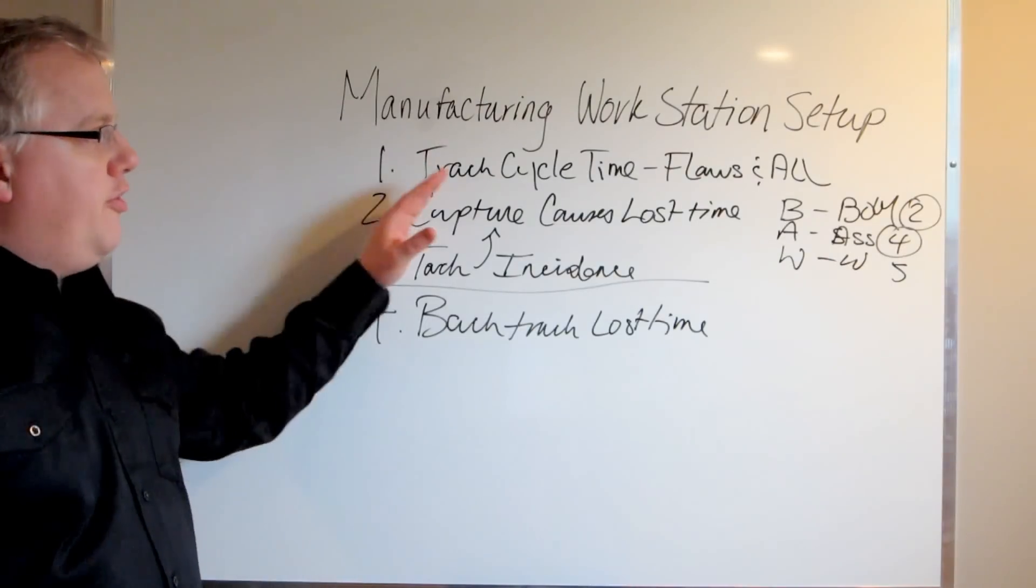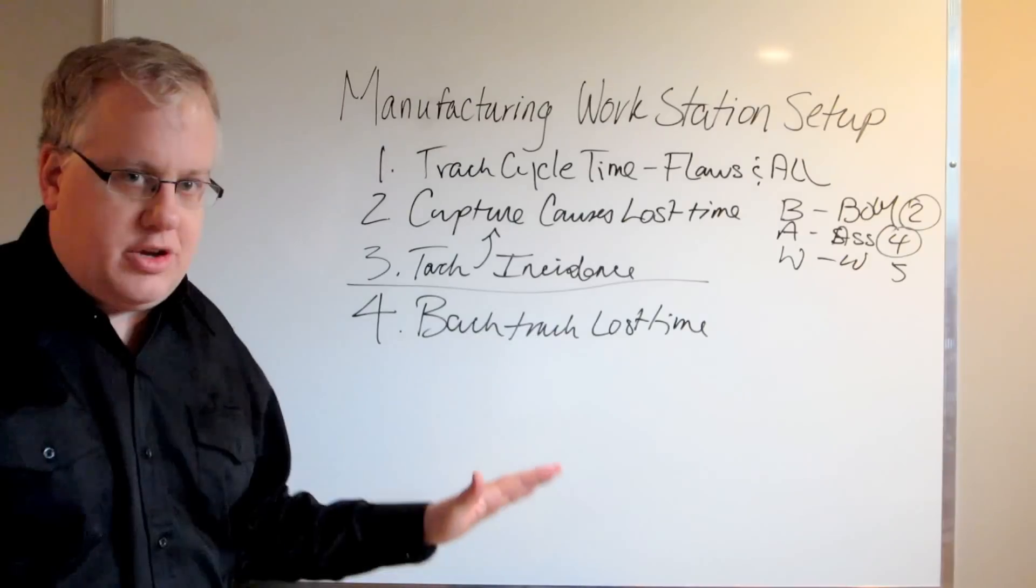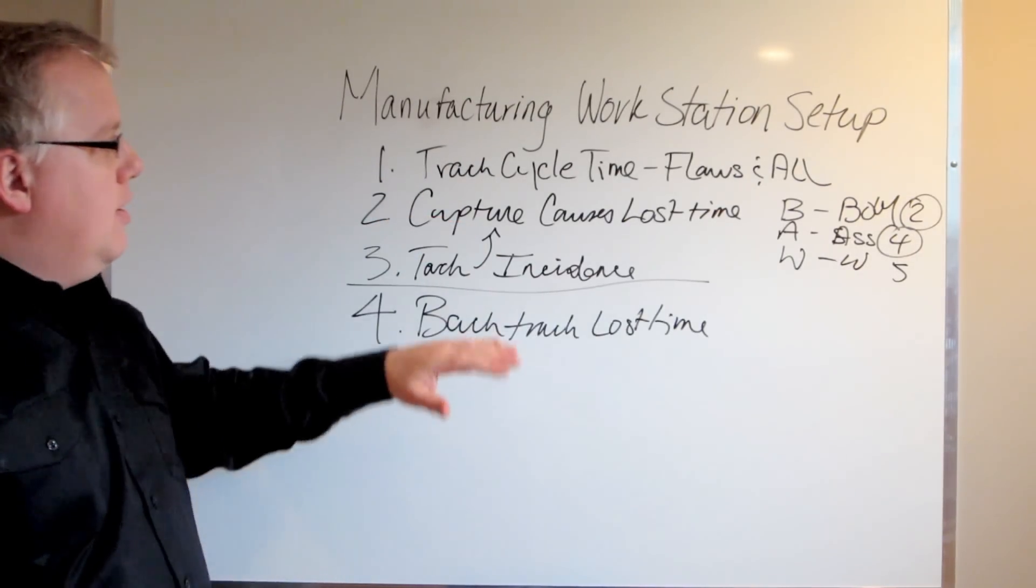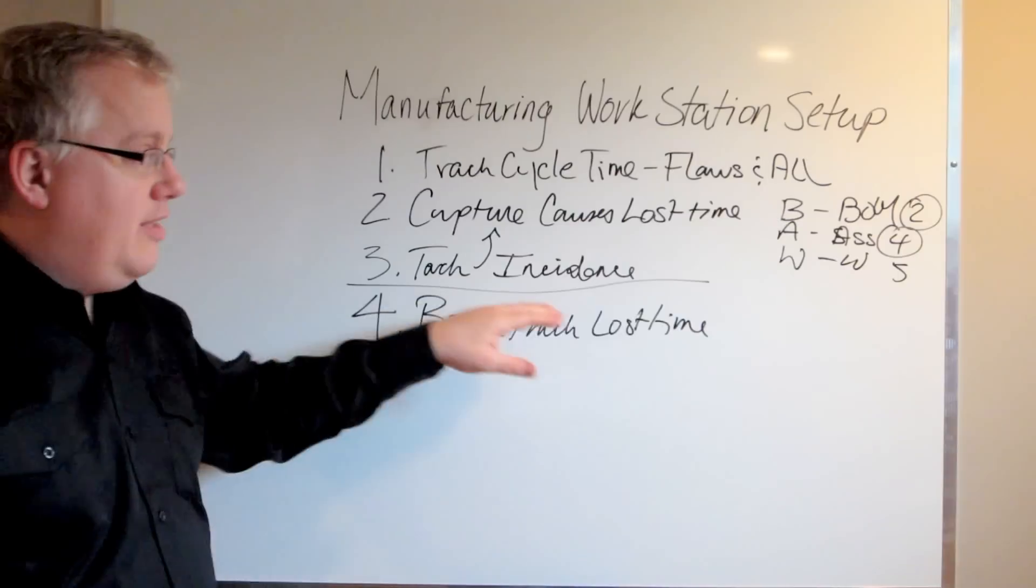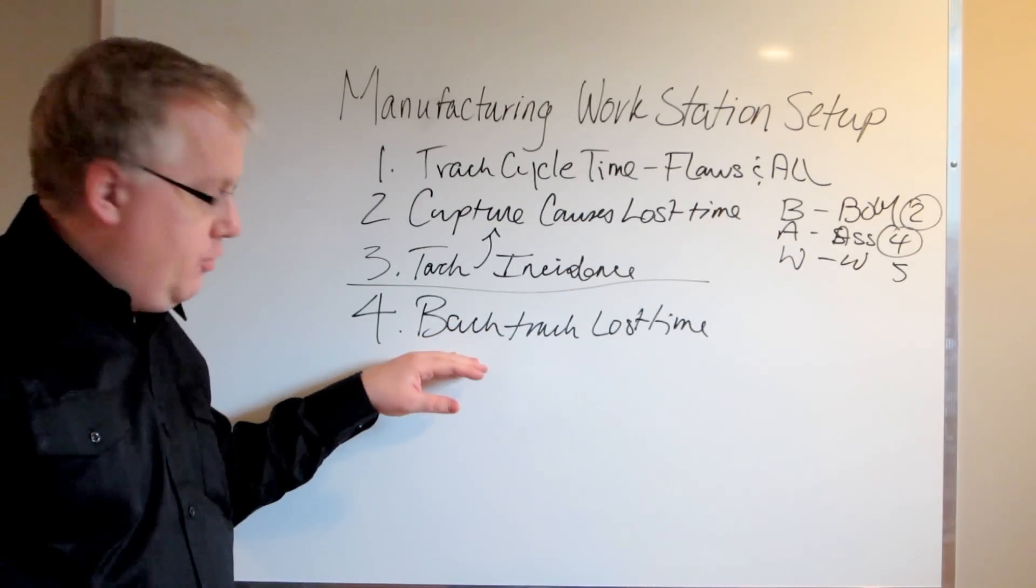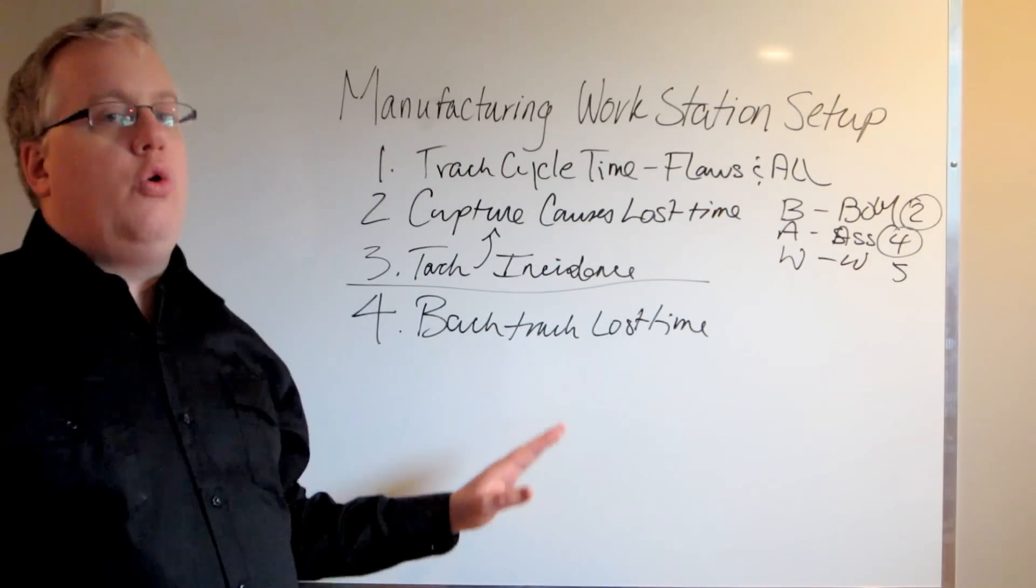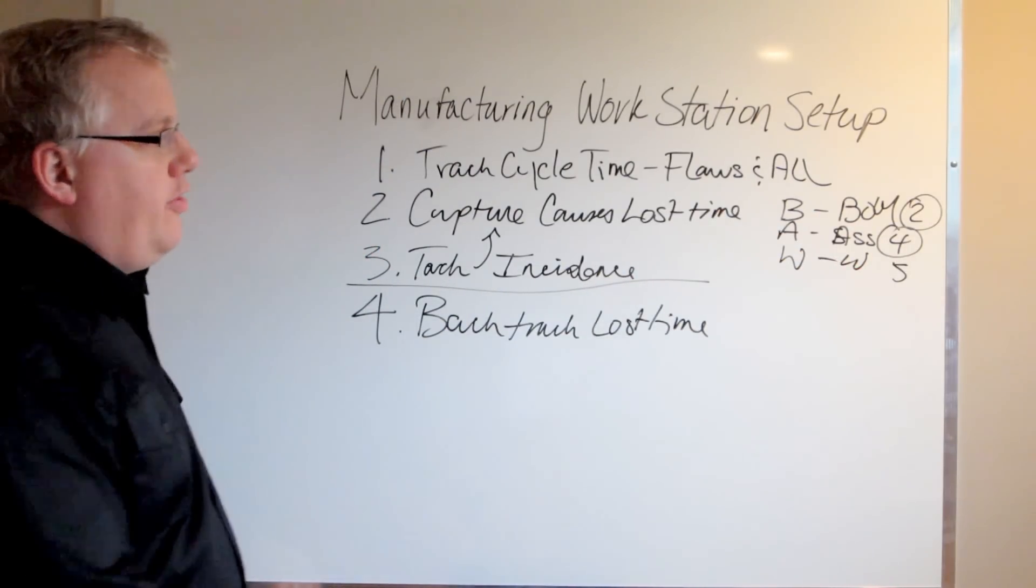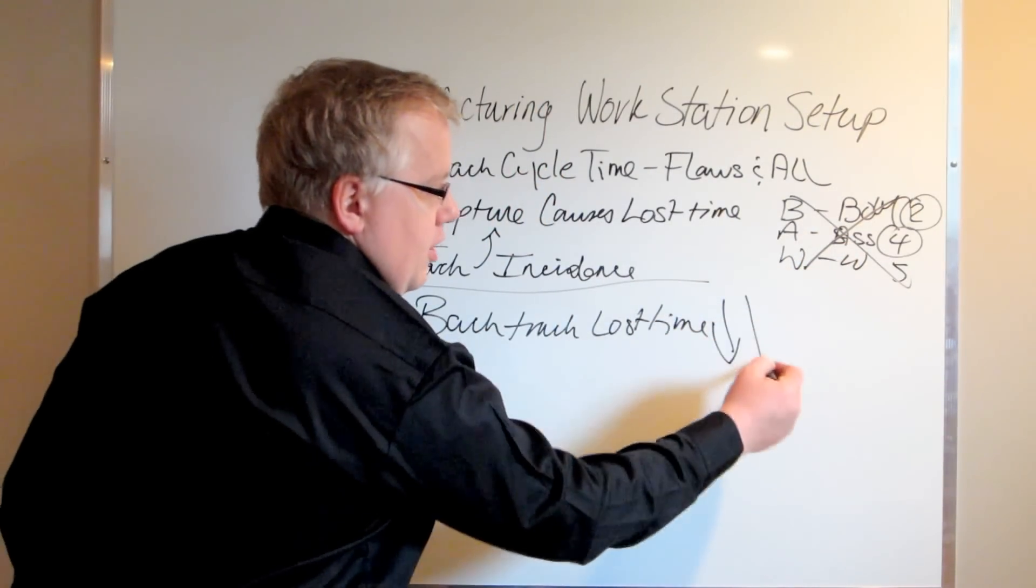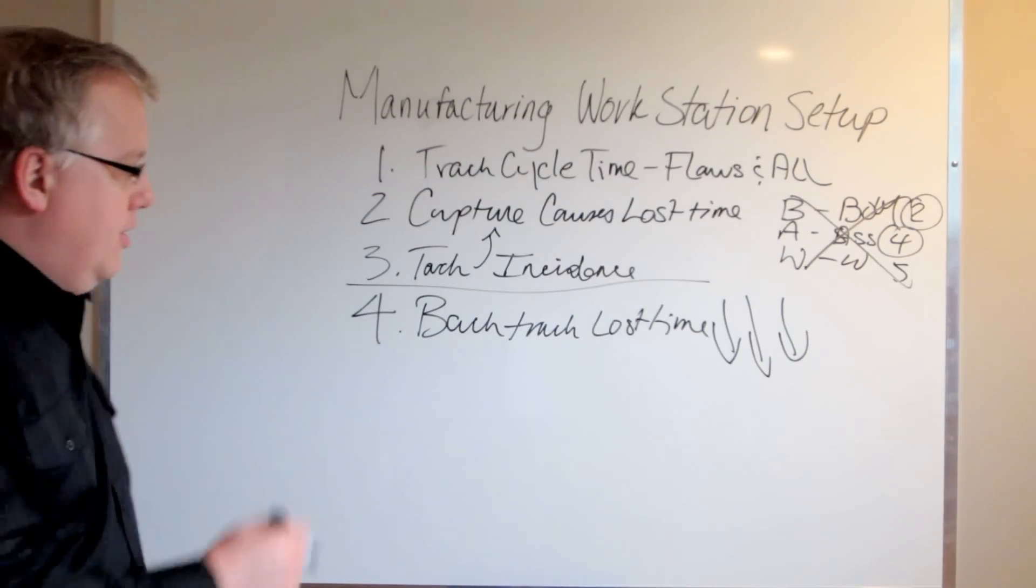The first time you do this, you're tracking your cycle times with all the mistakes, all the issues. You're going to capture what causes that lost time and track the amount of times that these individual causes happen. By the time you get to the fourth stage, now you're going to eliminate these causes completely and take a whole new set of cycle times. Once you eliminate these causes, you're going to see your cycle times go down dramatically.